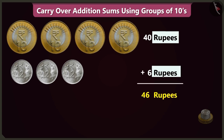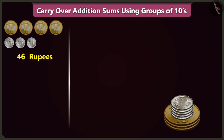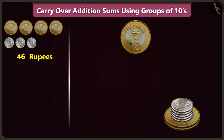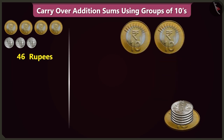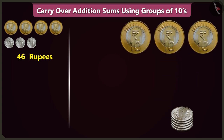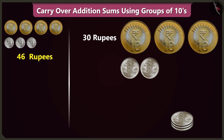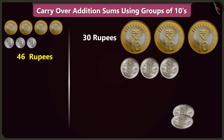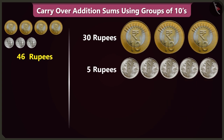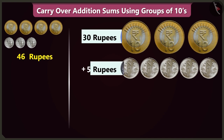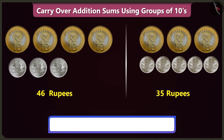In this pile of coins there are 1, 2, and 3 coins of 10 rupees, which is 30 rupees, and 1, 2, 3, 4, and 5 one-rupee coins. So there are 30 and 5 — 35 rupees.